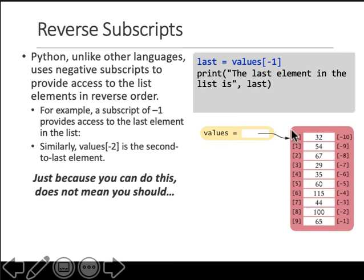Then reverse subscripts. Remember, list indices start from zero onwards. The reverse one starts like the last member is minus one. So the last element starts from minus one and comes back—minus one, two, three, four, and so on.